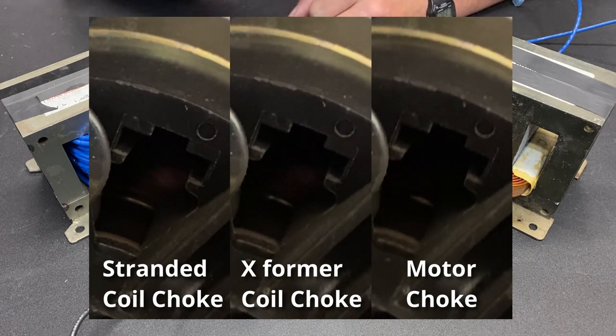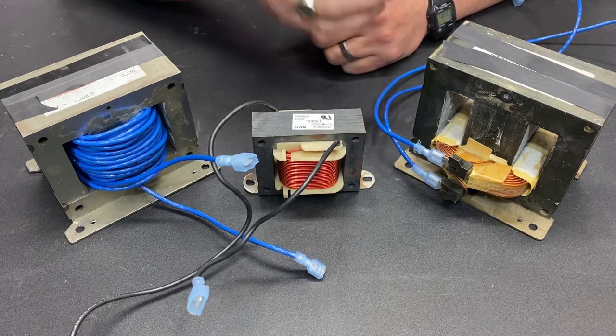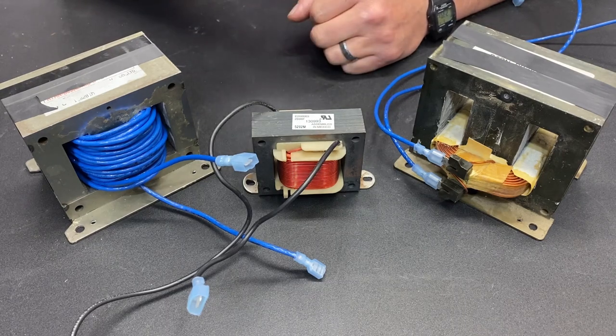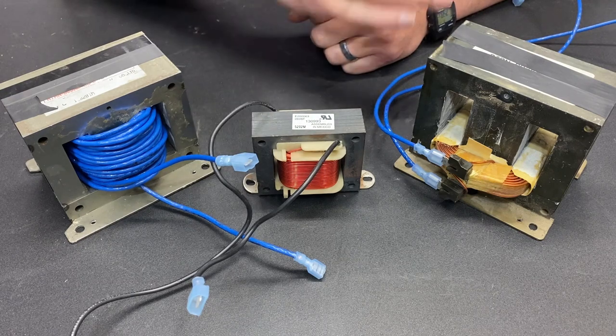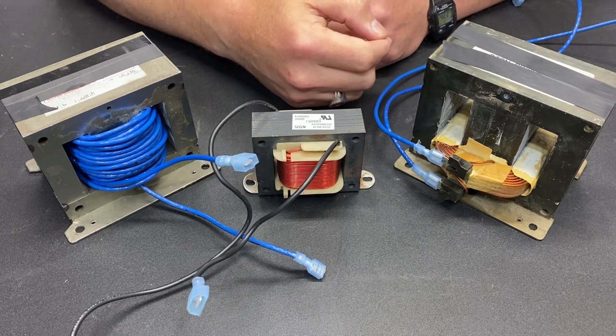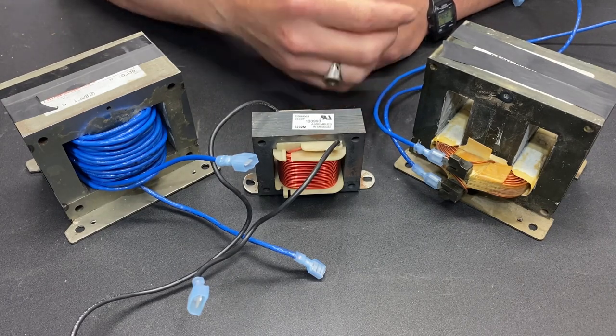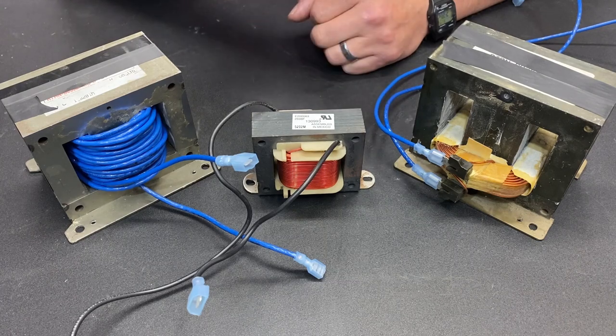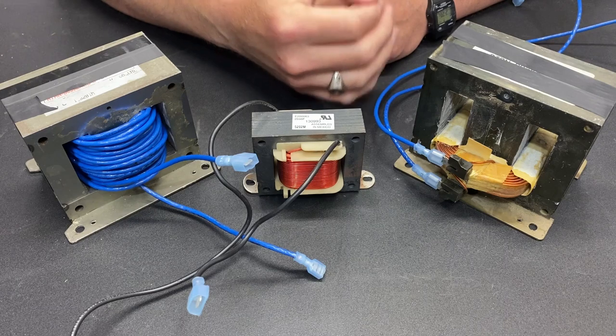This is why a choke is so important. If you are not running a choke, that constant sparking is going to significantly decrease the life of that motor. It's no wonder that you hear people complain about an SCR voltage controller burning out their motor, because without a choke, you're going to get lots of that sparking and the days of your motor's life are numbered.